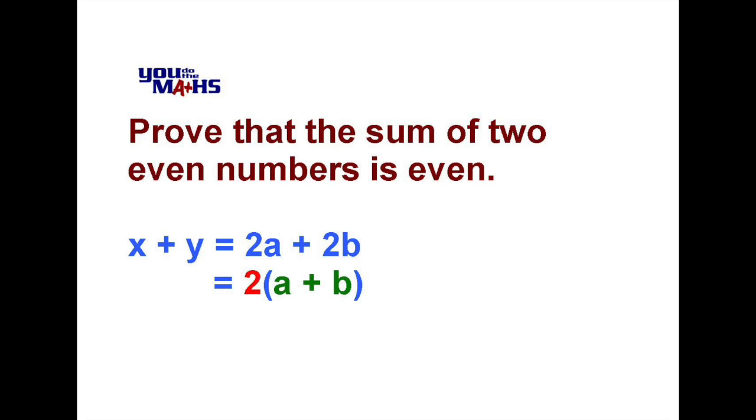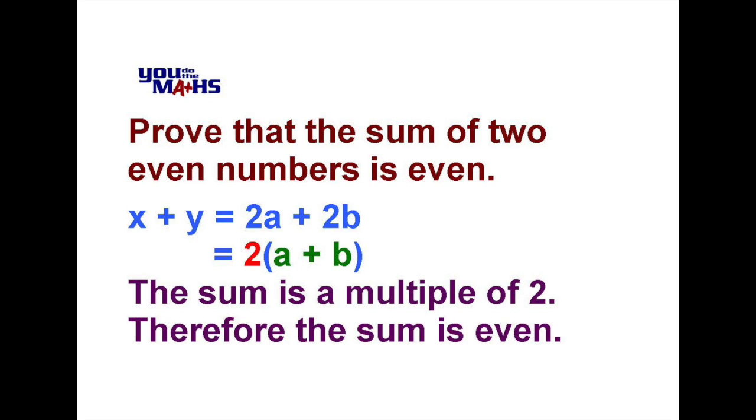And if that's a multiple of 2, which it is because it's being multiplied by 2, the result must be even. So the sum of two even numbers is an even number.